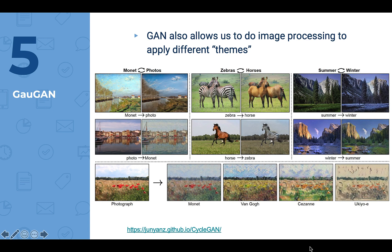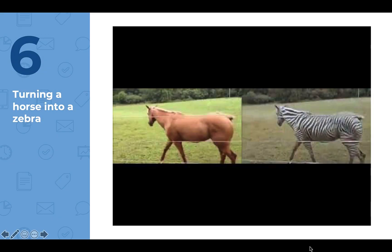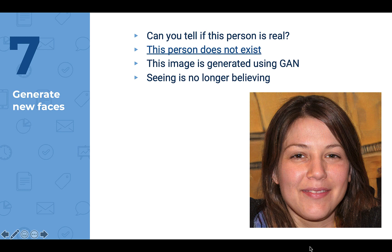GauGAN also allows us to do image processing to apply different themes. You can turn a photo into Monet style, zebras into horses, horses into zebras, and you can also turn summer into winter. A video on turning a horse into a zebra has already been uploaded to Moodle. So can you tell if this person is real? Indeed, this person does not exist — this image was generated using GauGAN. The moral is: seeing is no longer believing.